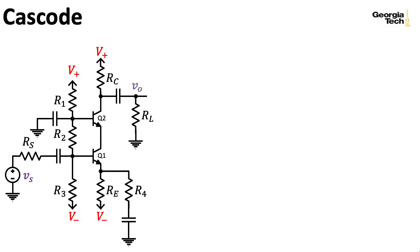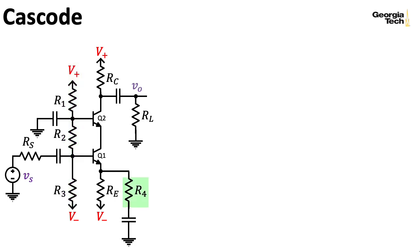In the cascode, we basically have a common emitter configuration followed by a common base configuration, but there's some weirdness in terms of how everything is biased here. We now have three resistors at the front handling the biasing instead of the usual two, and the resistor associated with bypassing this emitter resistance I'm now calling R4 — we used to call it R3.